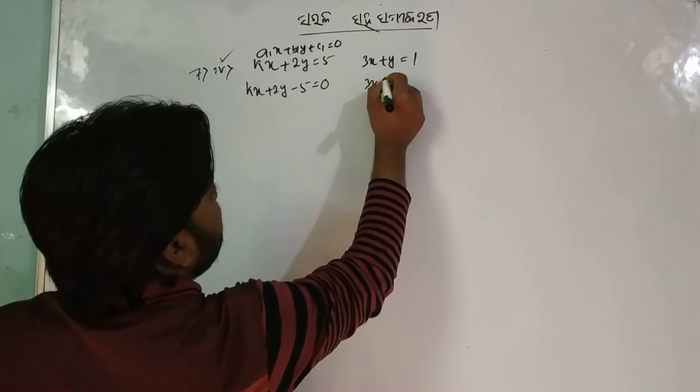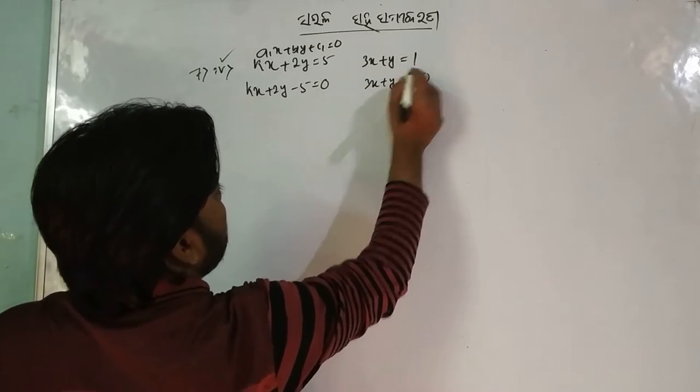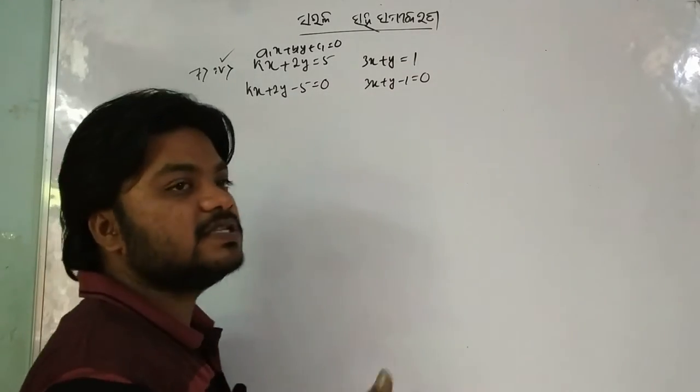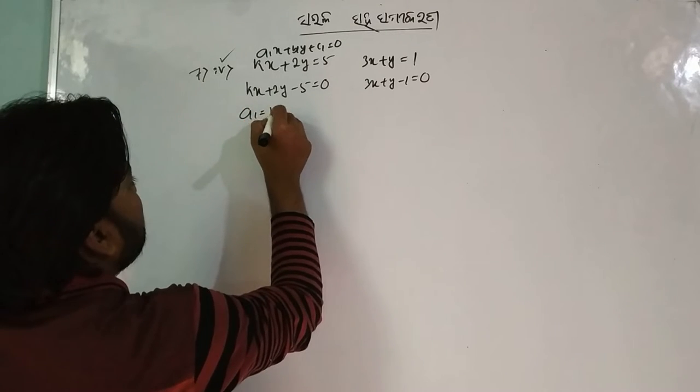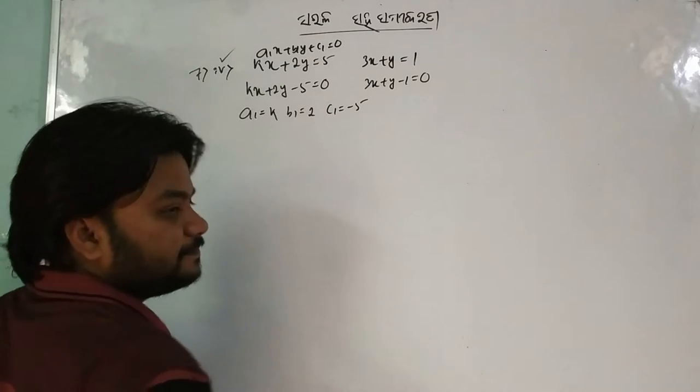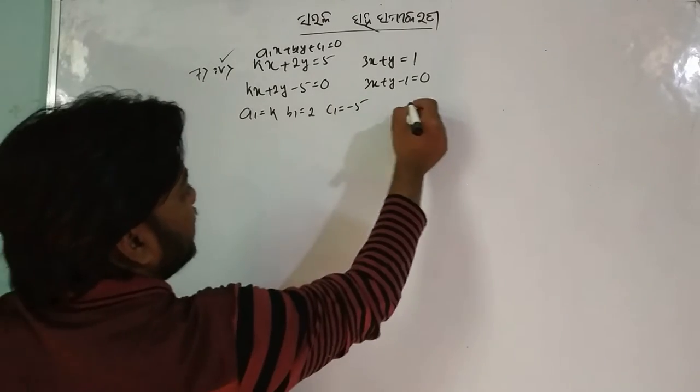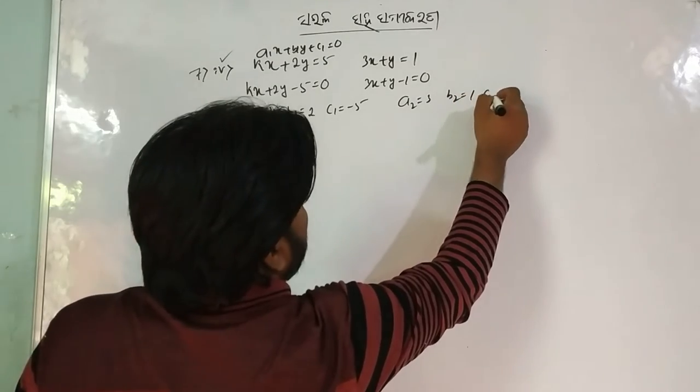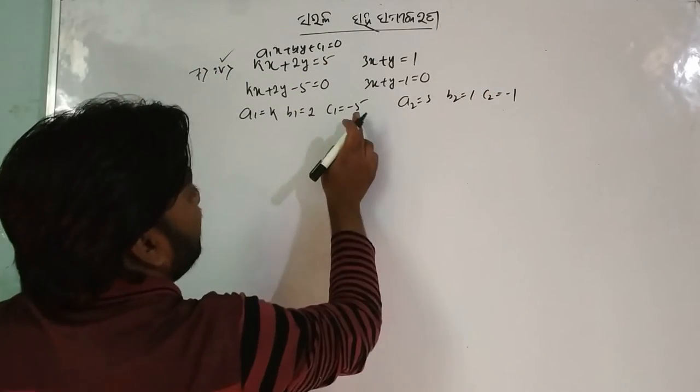Then 3x plus y minus 1 is equal to 0, and the condition of this equation is a1, b1, c1. So a1 is equal to K, b1 is equal to 2, c1 is equal to minus 5. Then a2 is equal to 3, b2 is equal to 1, c2 is equal to minus 1.